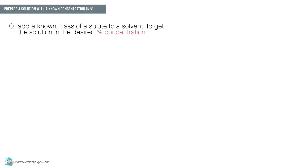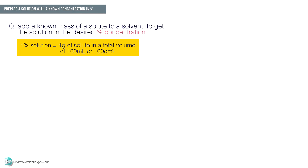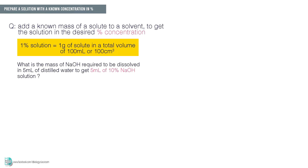In this situation, you're asked to add a known mass of a solute into a solvent to get the solution in the desired percentage concentration. Before we start the preparation, bear in mind that a 1% solution means that it contains 1 gram of solute in a total volume of 100 ml or 100 cm³. Let's use an example to understand this. Let's say you need to prepare 5 ml of 10% sodium hydroxide solution. You are asked to find out what is the mass of sodium hydroxide required to be dissolved in 5 ml of distilled water to get the desired solution.